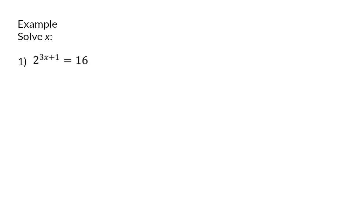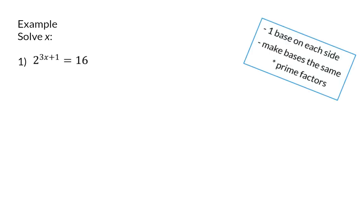In the first example, we now need to solve x. On both sides, I already have only one base. The base of 2 on the left is already a prime number, but the 16 on the right can be rewritten in terms of prime factors as 2 to the power of 4. Now I can again make the conclusion that because the base on the left is equal to that on the right, the exponent on the left should have the same value as the one on the right. Therefore, 3x plus 1 should be equal to 4.